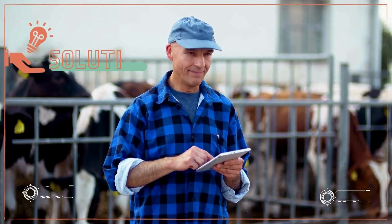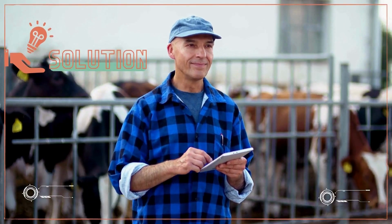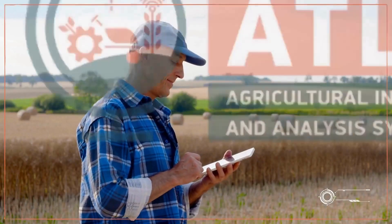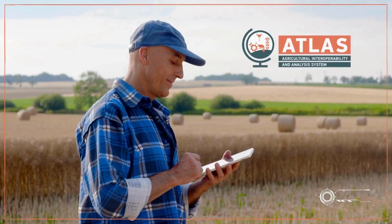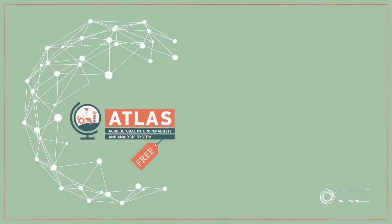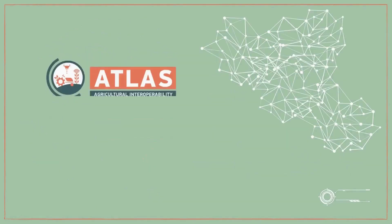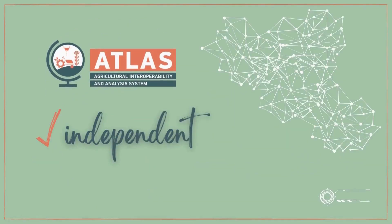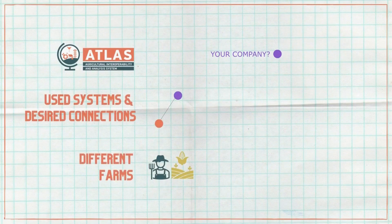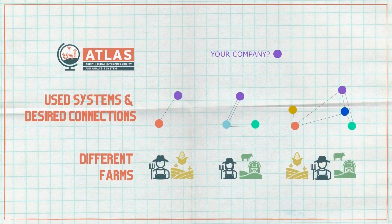That's why we came up with a solution that helps us and you. Our approach is called ATLAS. ATLAS is free and is made to be the sweet spot of security and ease of data connectivity in agriculture. It's independent and provides a technically simple way to securely connect data between farmers' different systems — and that's what we want for our farmers in the end.